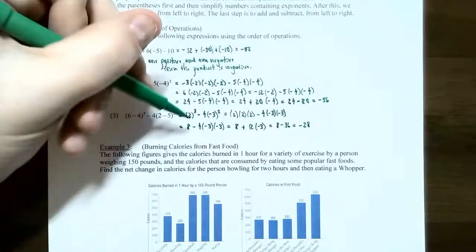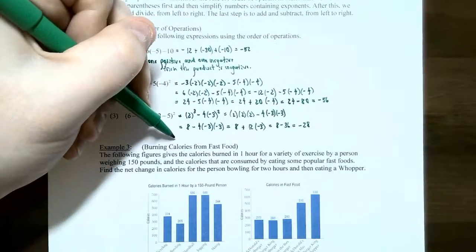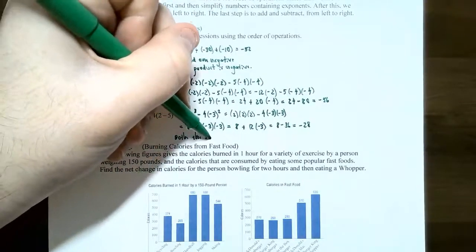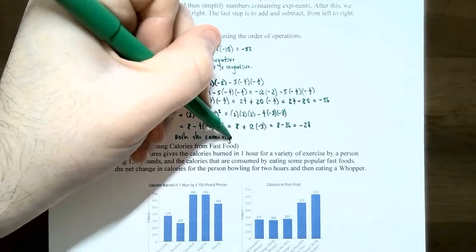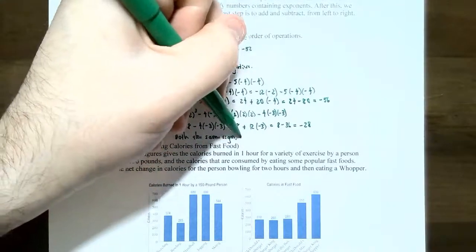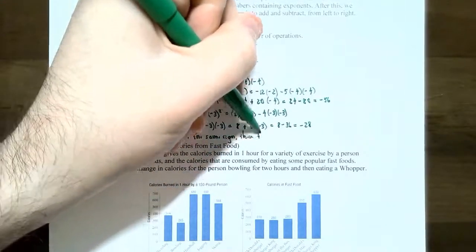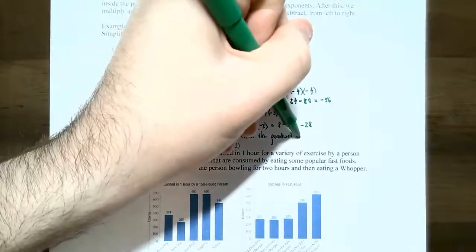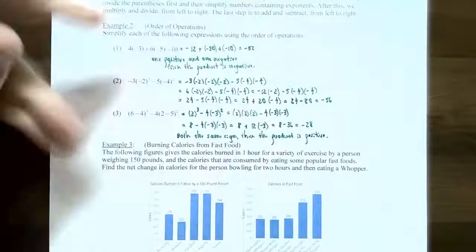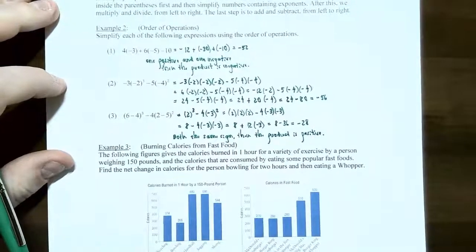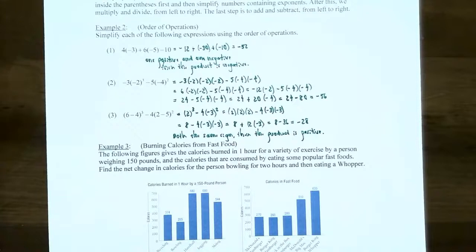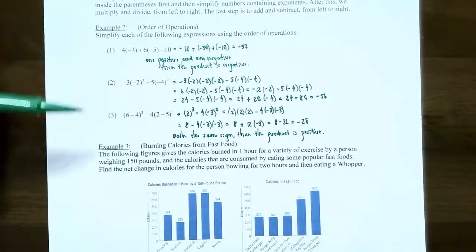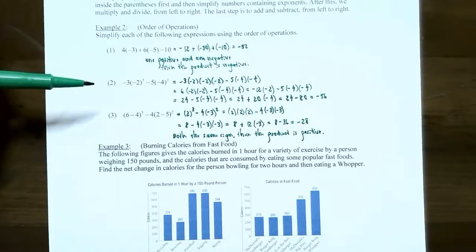Keep in mind the two rules for multiplication: if both numbers have the same sign, the product is positive. If one number is positive and the other is negative, the product is always negative.